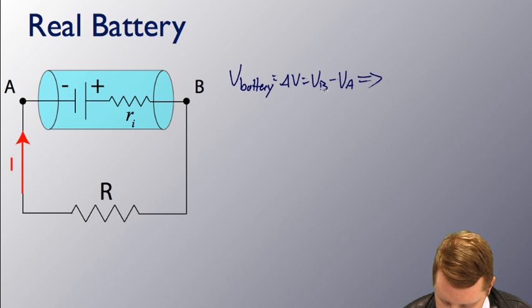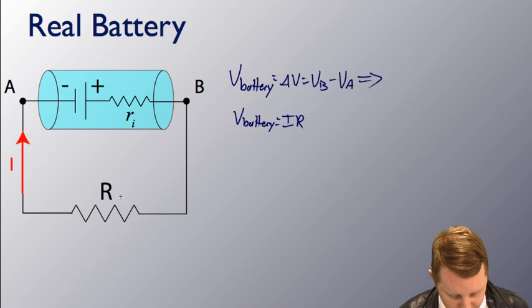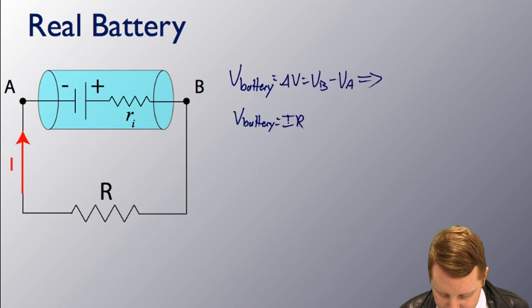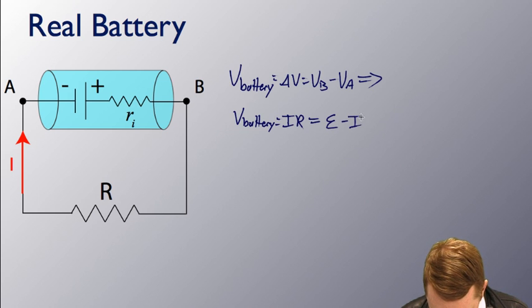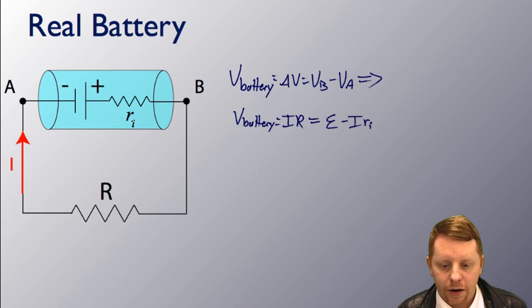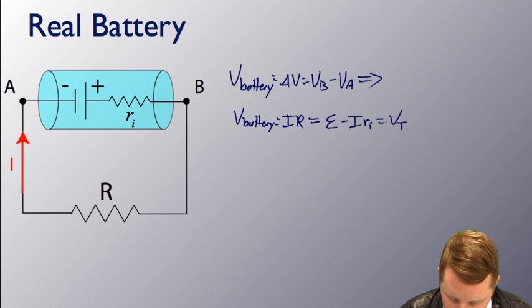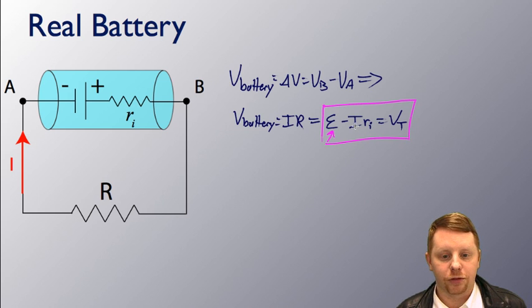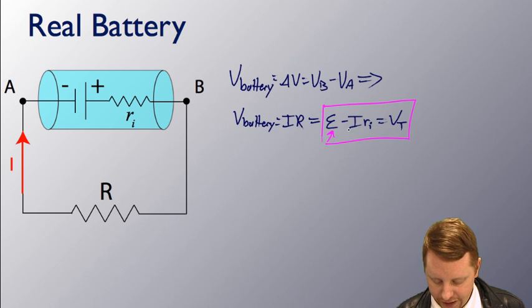is going to be the battery must be equal to I times R, the voltage drop across our resistor here. You can see the potential drop IR compared to VB minus VA must be the same. Therefore, if V battery is equal to IR, that's equal to our EMF minus current through our internal resistor, EMF minus the drop IRI, which is equal to the terminal voltage. The terminal voltage, in this case, is going to be the EMF minus the voltage drop across the internal resistor. We have a slightly lower terminal voltage than the EMF, the maximum potential of our battery.